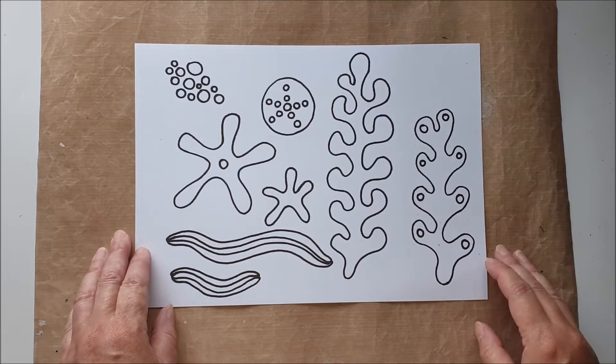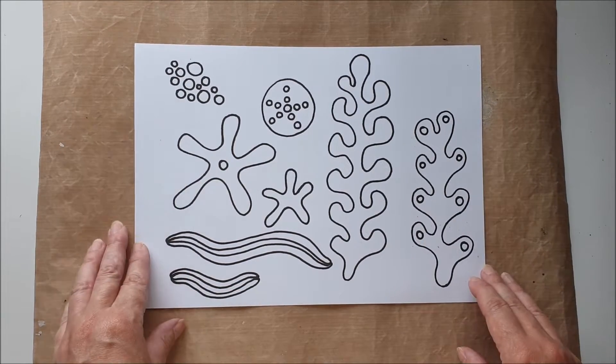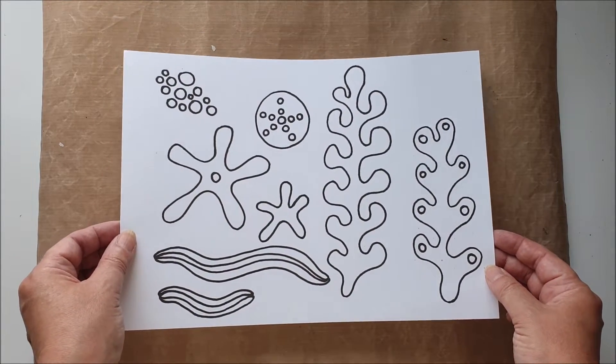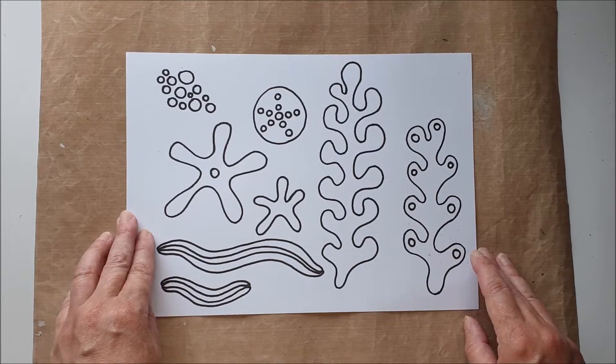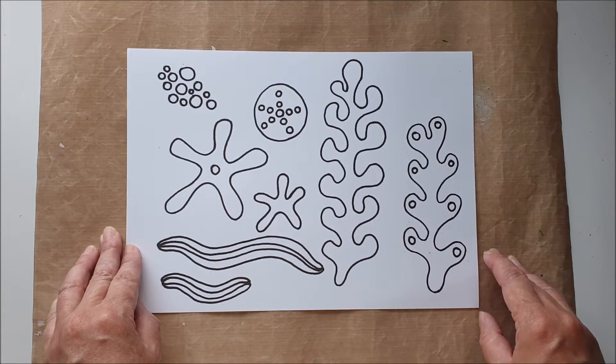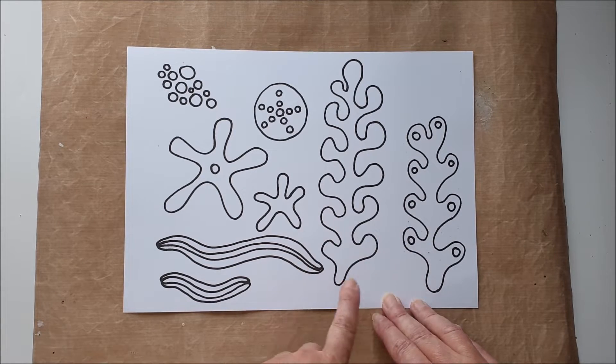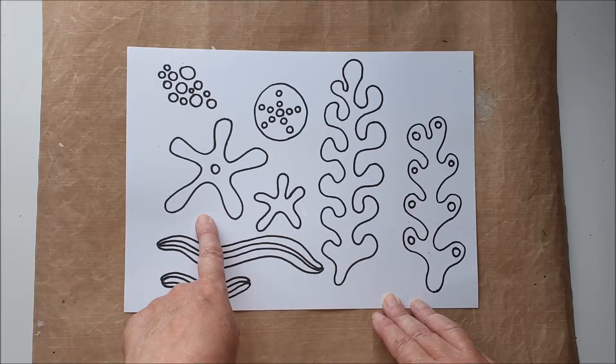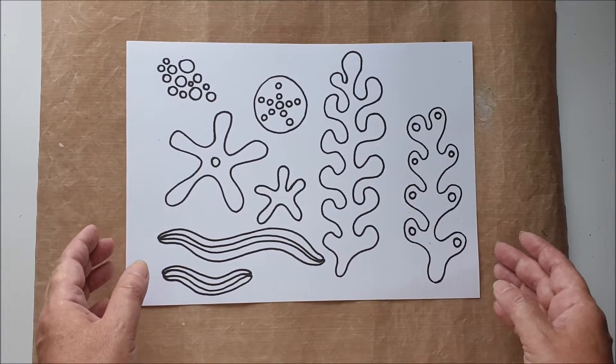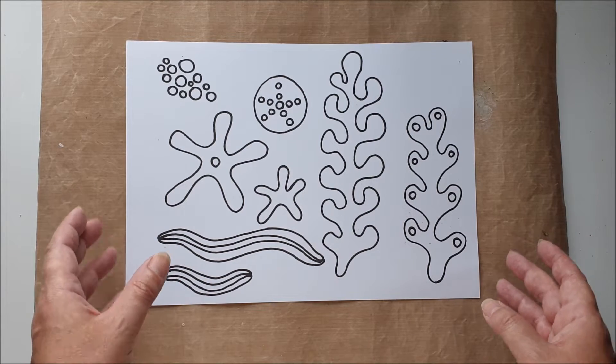I've gone for an undersea theme for today's project and I've drawn out some simple shapes to use as my templates. Now I've made this available for you to download and print out yourself if you want to. I'll pop the link in the description below. Please feel free to use this if you want to. If you want to go ahead and draw your own shapes, that's absolutely fine as well. But I've gone for some simple abstract seaweed shapes, starfish, sea urchin, bubbles, very simple shapes today to create some stamps, stencils and masks.